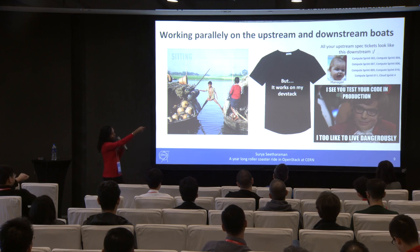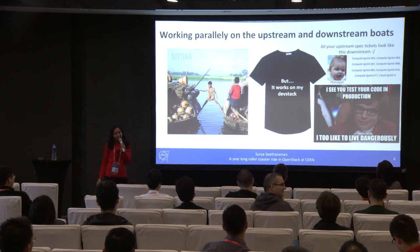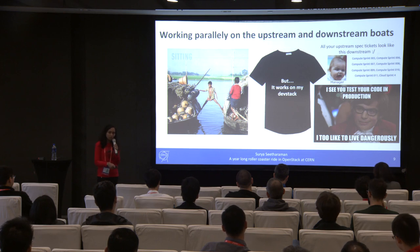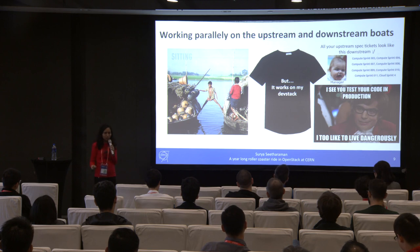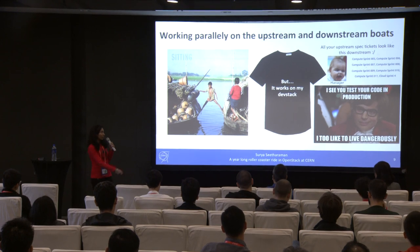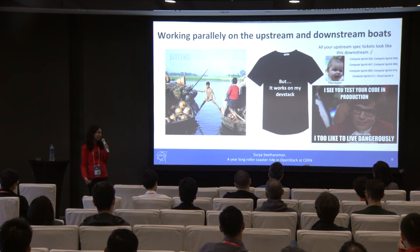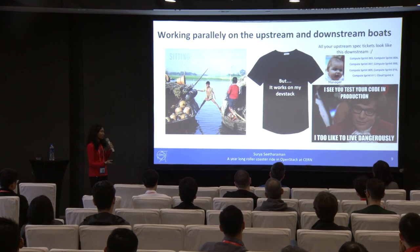For tracking upstream tickets in the downstream world, we need a different system, because specs take cycles to complete. The micro versions in the Nova API just go from five, six, seven, all the way up, and your downstream colleagues are looking at you like, 'Are you even completing this ticket? What's happening?' So that's just one of the fun facts about working in this dual role.